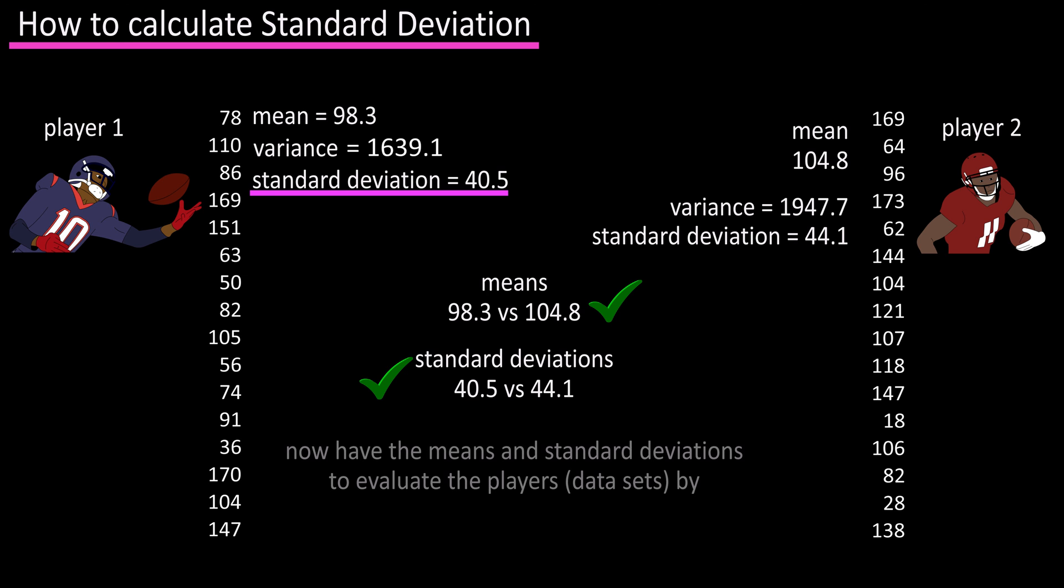Now you as an evaluator have two numbers or statistics, the mean and the standard deviation, to consider when deciding who to draft fantasy wise. There are more advanced ways to compare the variance of data sets and we'll discuss those in future videos.